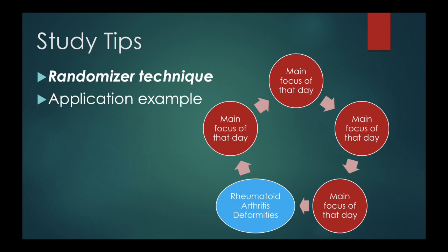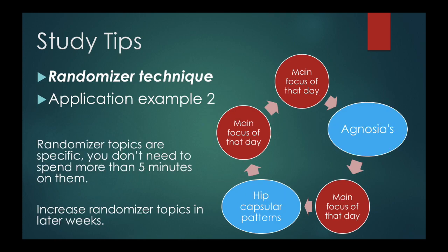The randomizer technique might seem redundant: your main focus that day is whatever you're studying, and then you just throw something random in there — like rheumatoid arthritis deformities: swan neck deformity, boutonniere's deformity — and then go back to whatever you were studying. You got an extra repetition of something you need to know before you go into the NPTE. You could also do more than one randomizer topic per day alongside your main focus.